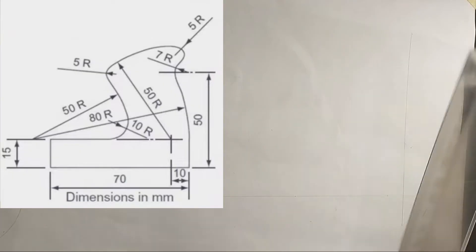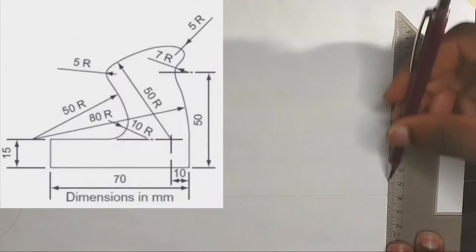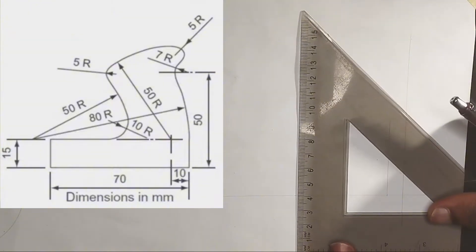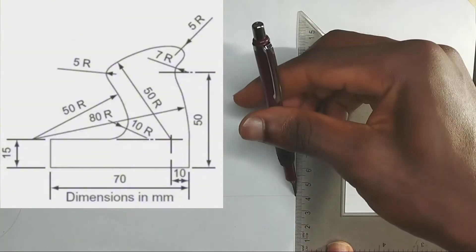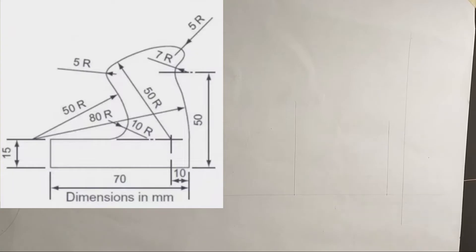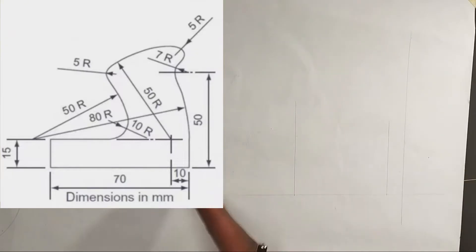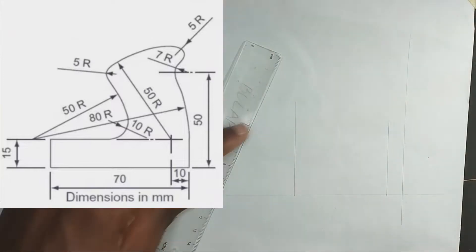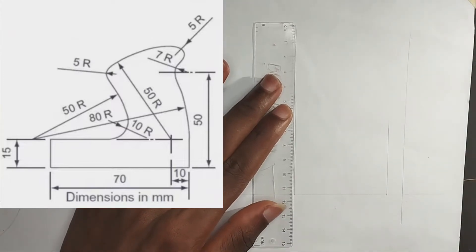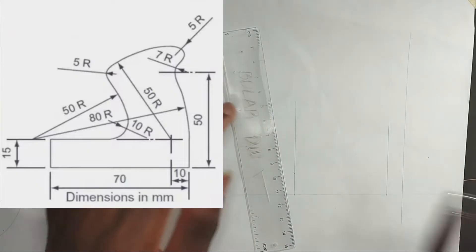Then from those lengths, I'm going to draw a straight line up like this. Please make sure you are using the same line. Then from this particular edge also, I'm going to draw another straight line up. We have been given the length of this particular line at the bottom to be 15mm, so I'm going to pick 15mm on my ruler like this.